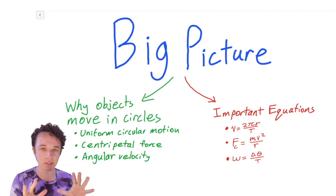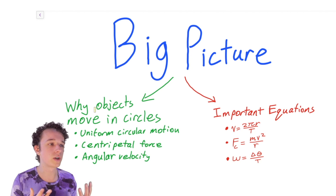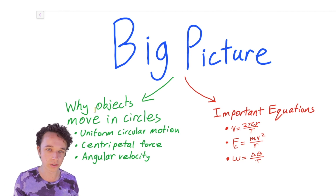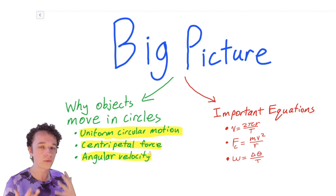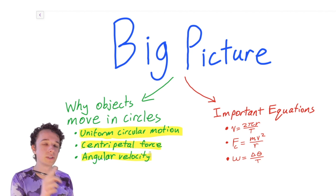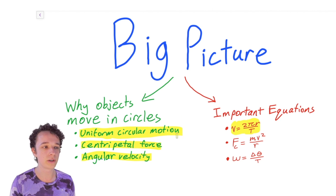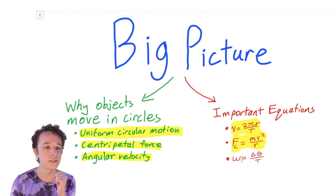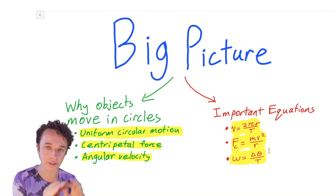There are two main sides of what you're learning in this video. One side is the theoretical side, and the other side is the mathematical side. The theoretical side tries to answer the question of why do objects move in circles? We're going to learn about uniform circular motion, centripetal force, and angular velocity. Related to these concepts are three important equations: an equation for tangential velocity, one for centripetal force, and one for angular velocity.